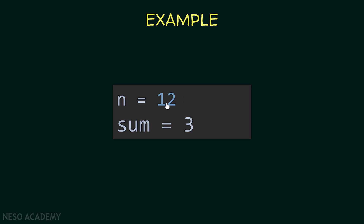Now we want to get rid of that digit, so we divide n by 10. Now n is equal to 12. We do the same thing: add n modulo 10 to sum, so sum becomes 5. Then divide n by 10, so n becomes 1. We add n modulo 10 to sum, so sum becomes 6. Then divide n by 10, so n becomes 0 — because we are performing integer division. When n is equal to 0, we know we are finished. So we keep extracting digits as long as n is greater than 0.